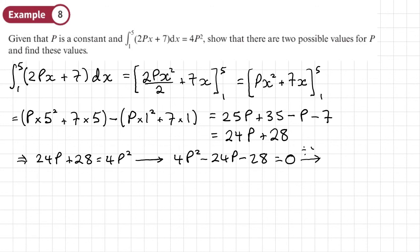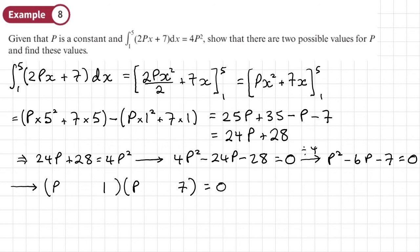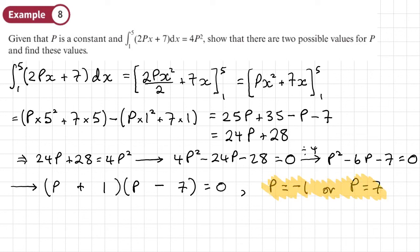We factorize P squared minus 6P minus 7 equals 0. We need two numbers that multiply to minus 7 and add to minus 6: that's minus 7 and plus 1. So (P minus 7)(P plus 1) equals 0, giving P equals 7 or P equals negative 1. We've completed the question — there are indeed two possible values of P: negative 1 and 7.